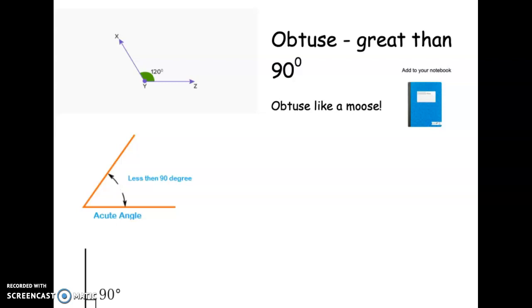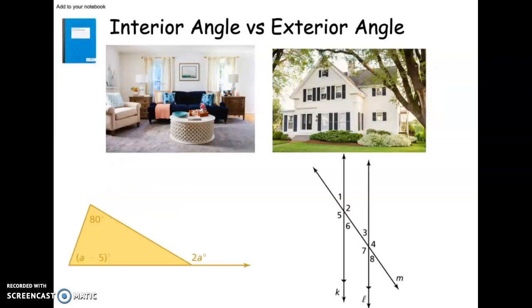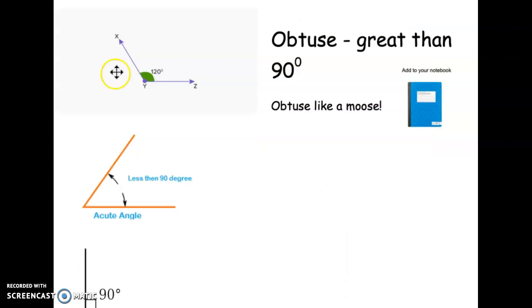You should have written those in your notebook. And pause this at any time. Let's write these next three in your notebook as well. So, the first one is obtuse. And obtuse is an angle anything greater than 90 degrees. So, we say, obtuse like moose, because it's a big angle.